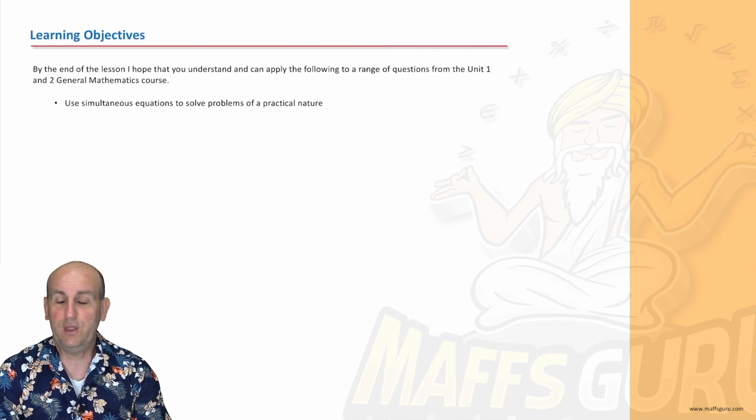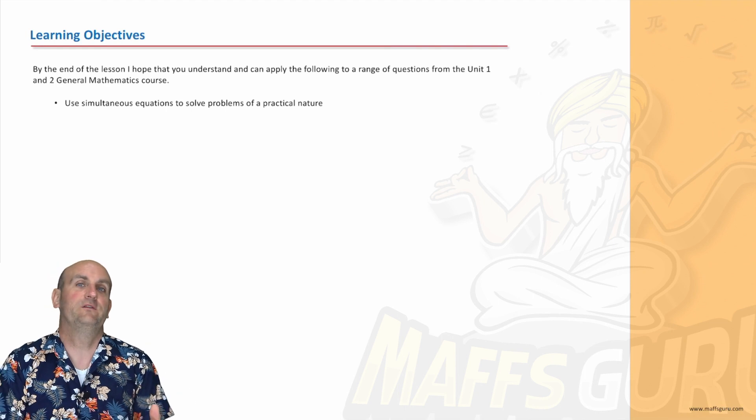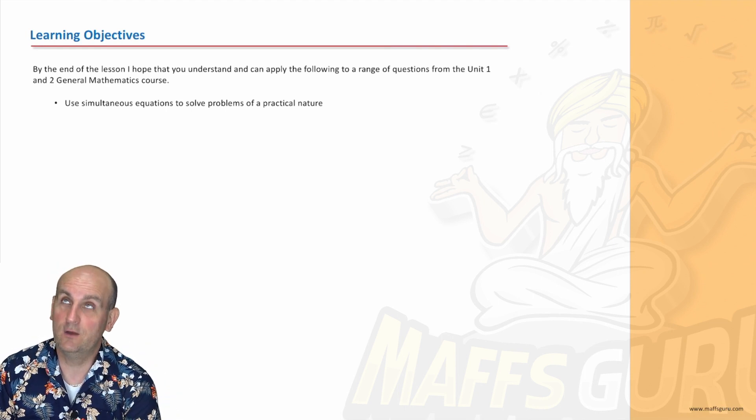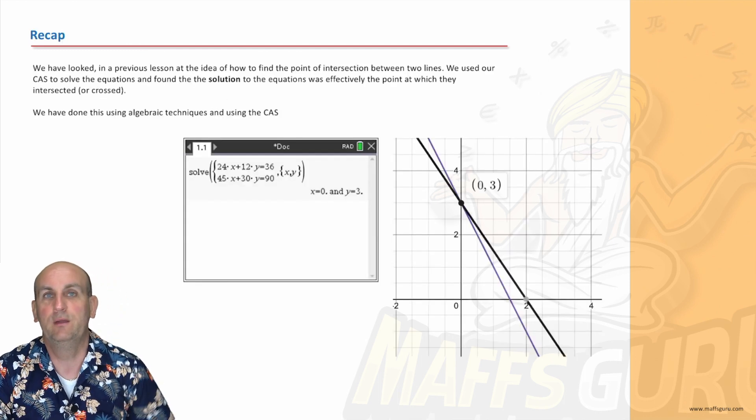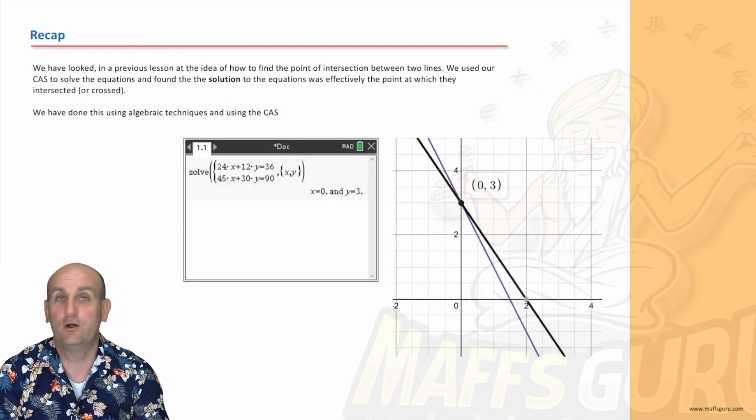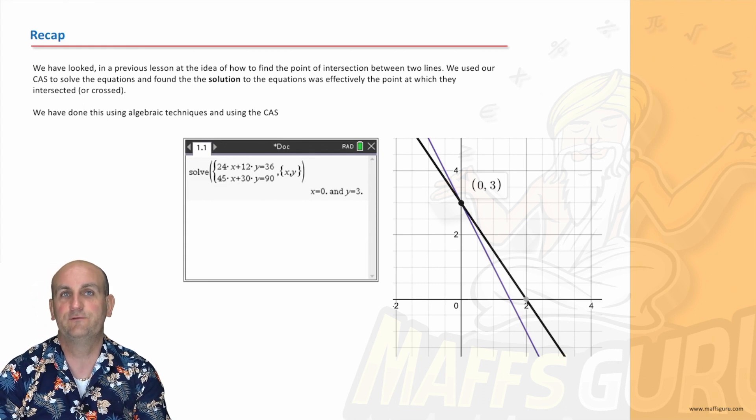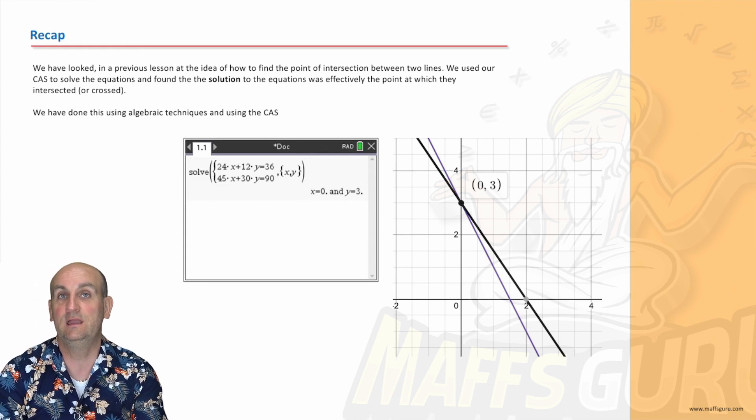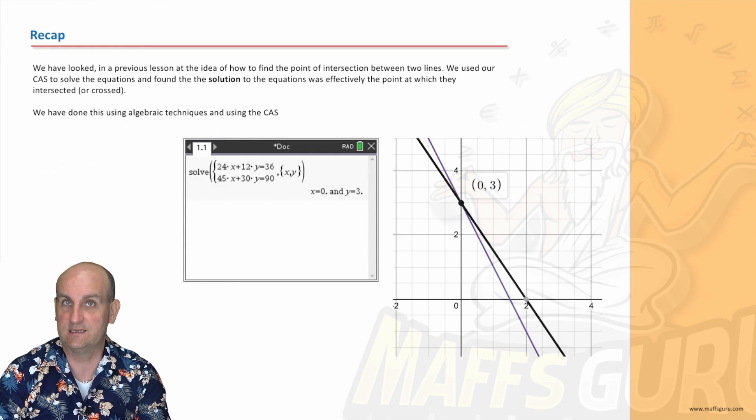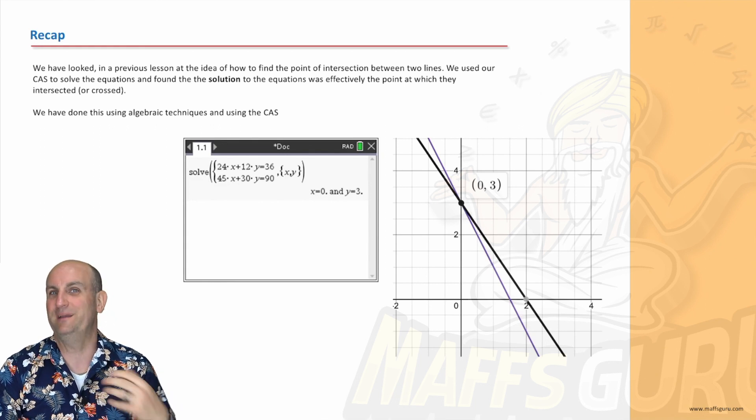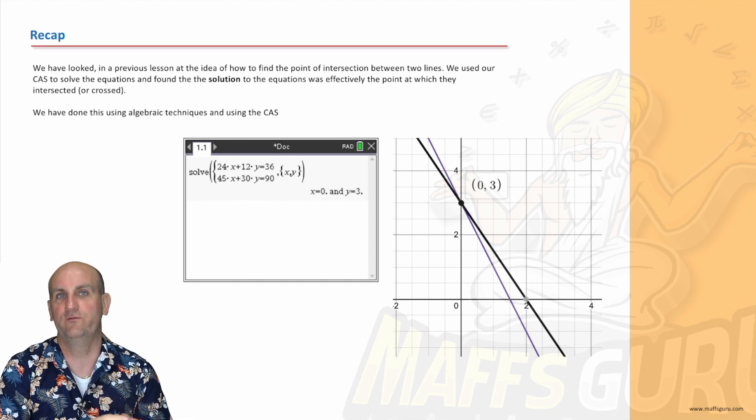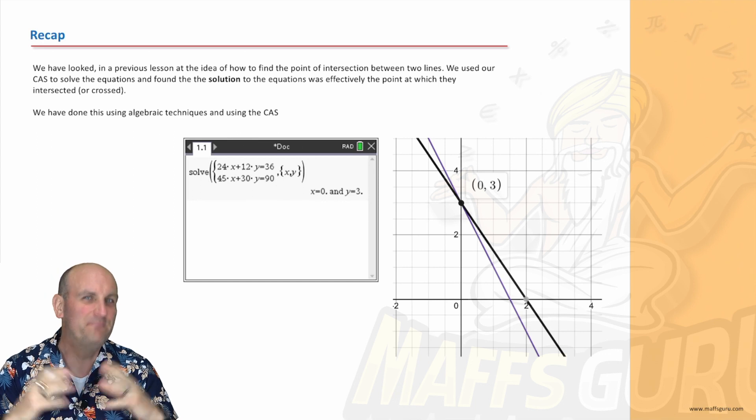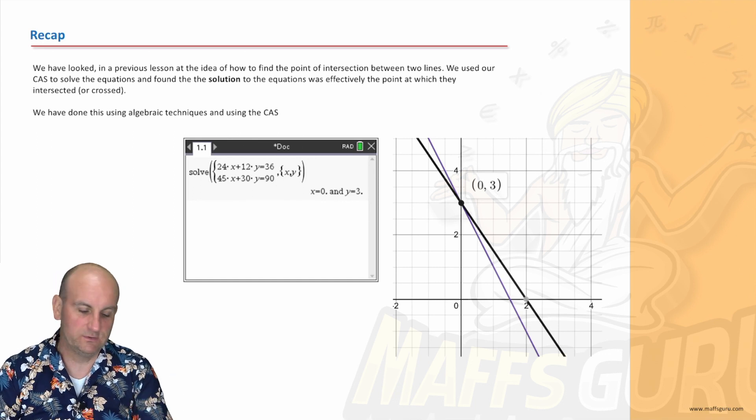Now what are we going to do today? Looking at simultaneous equations to solve problems of a practical nature. The whole point of doing maths is that we apply it in real-world situations. We're going to recap what simultaneous equations are: they are two equations that can be solved simultaneously to find a point of intersection, where these graphs meet. It's where one point has the same X and the same Y value.